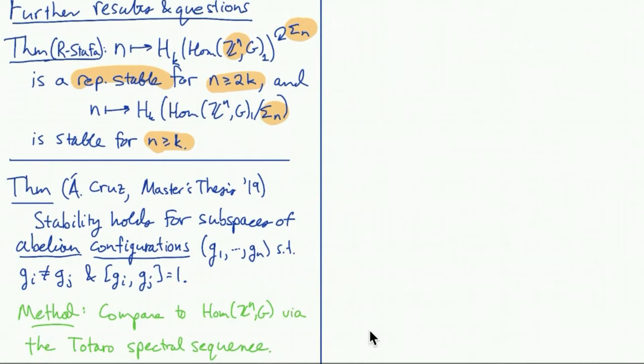I also wanted to mention another natural question to ask is what happens if you look at configurations of commuting elements. So insist that different terms in your commuting tuple are actually distinct. Angel Cruz wrote a master's thesis last year in Mexico, where he looked at this question and was able to prove similar stability results. And basically the method is to compare these configuration spaces to the full space of commuting elements using the Totaro spectral sequence. I had to guess, my guess would be that the bounds you get here are not optimal and maybe more modern methods could be used to get sharper results here, but I'm not certain.